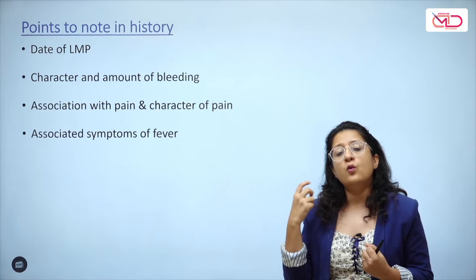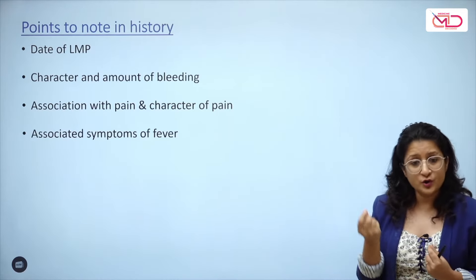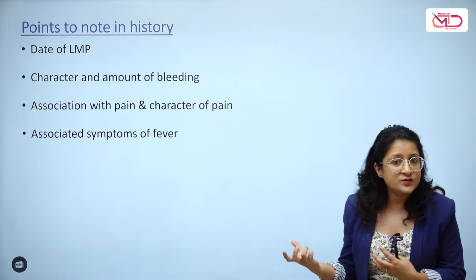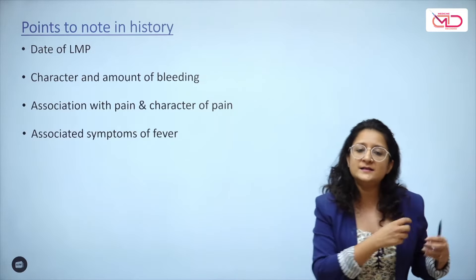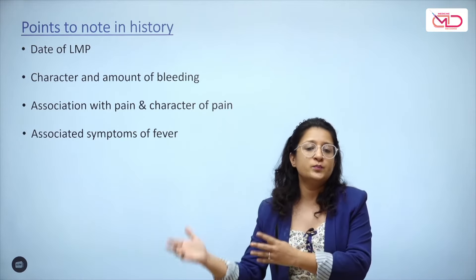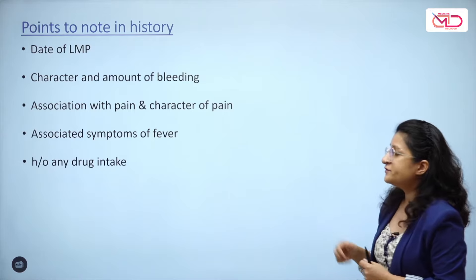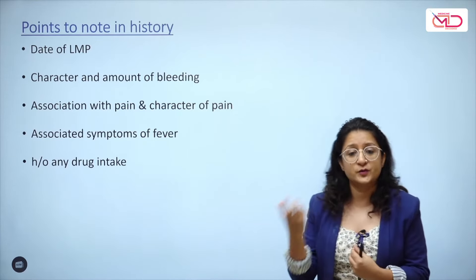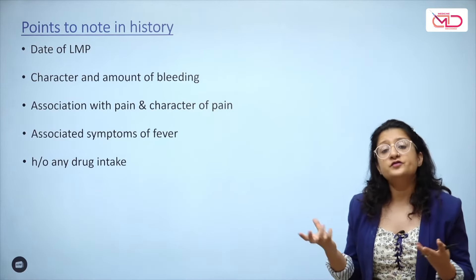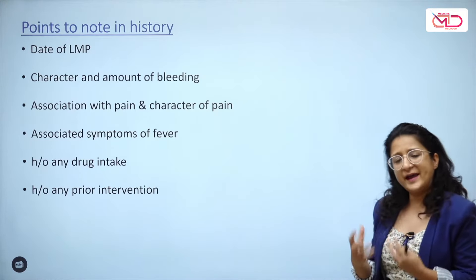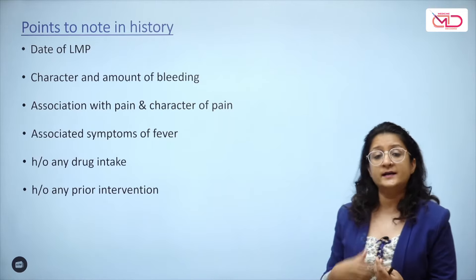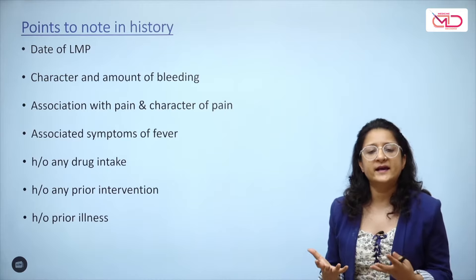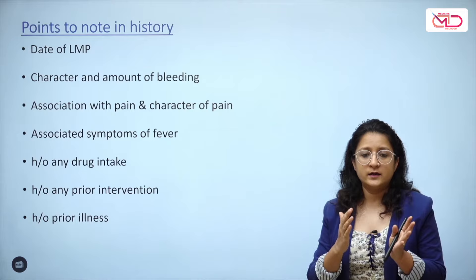Ask about fever at the outset — she may have sought a medical opinion elsewhere or had an instrumental intervention. These points get lost if not asked early. Ask about any drug intake: women unaware of pregnancy may have taken prescription medication, or importantly, there may be a history of abortifacient intake. Ask about prior interventions and history of prior illness — conditions like PCOS, diabetes mellitus, or genital tuberculosis can be pointers toward the cause of miscarriage.